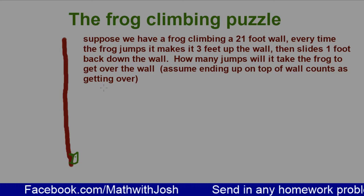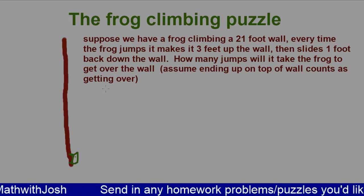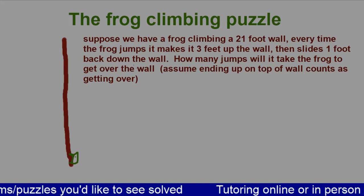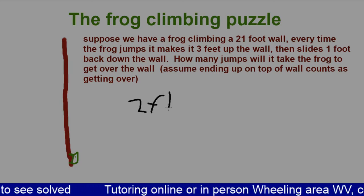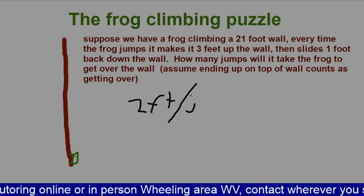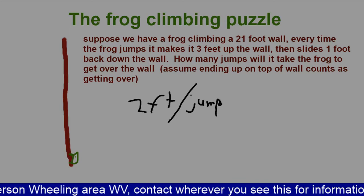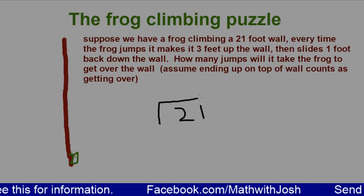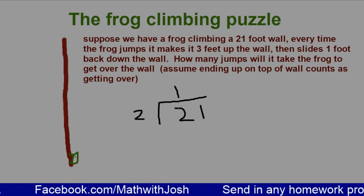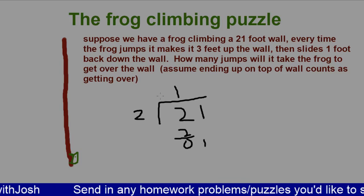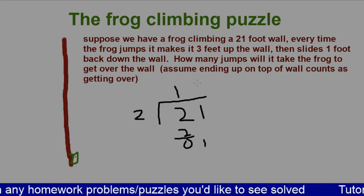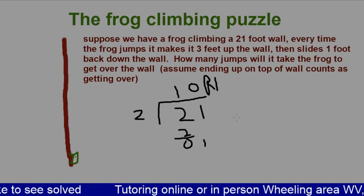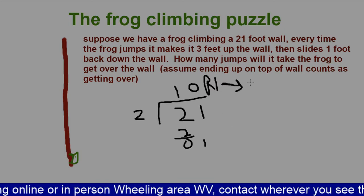If you're still with me, the most common guess people make is they look at the problem and realize the frog makes a net of two feet per jump. It's a 21-foot wall, and the frog is going in increments of two feet at a time. So it's going to take 10 remainder one jumps, which rounds up to 11.